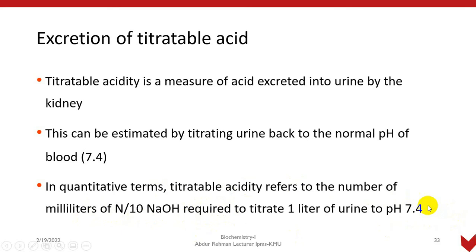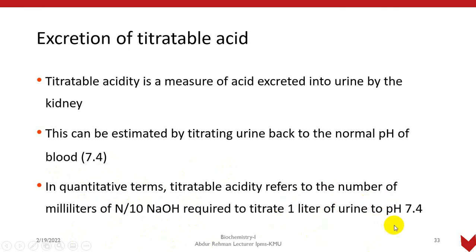In quantitative terms, titratable acidity refers to the number of milliliters of normal NaOH required to titrate one liter of urine to pH 7.4. So we can quantitatively measure how much sodium hydroxide is needed to bring one liter of urine back to pH 7.4.